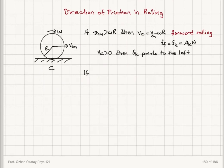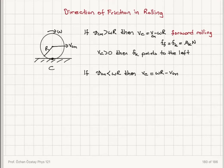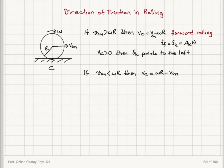This is again my contact point C. Now I want to know what happens if the velocity of the center of mass is less than ωR — then what would be the velocity of the contact point?